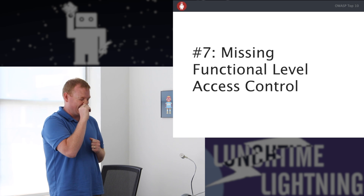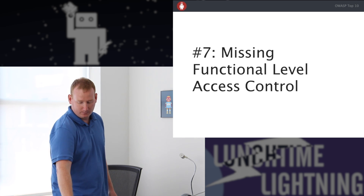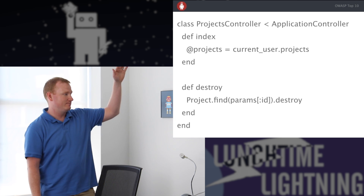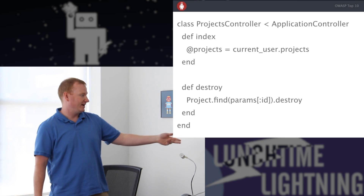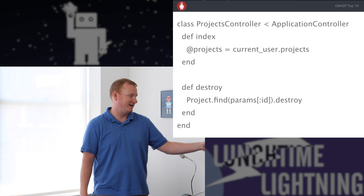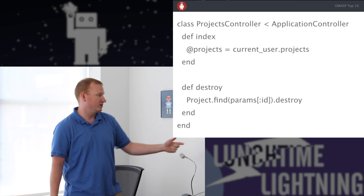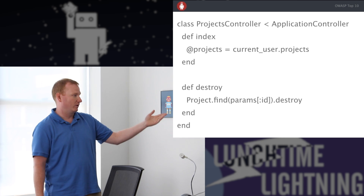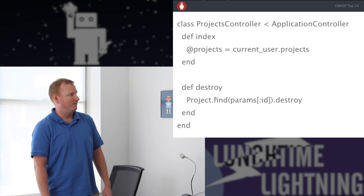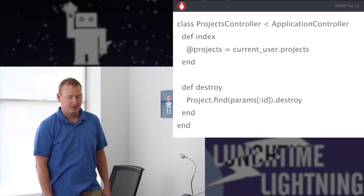Missing functional level access control is similar to the direct object reference one. Here's a controller example: in the index action, I'm fetching all of the current user's projects. But in the destroy action, I just say `find ID and destroy` — I didn't scope it to the current user. I didn't verify that the project belongs to the current user. The easy fix is `current_user.projects.find(params[:id]).destroy`, or a before_filter that verifies they're allowed to delete the project they're passing. This is obvious when you look at it in this context, but I see it a lot even in our projects. Look out for it in code reviews.